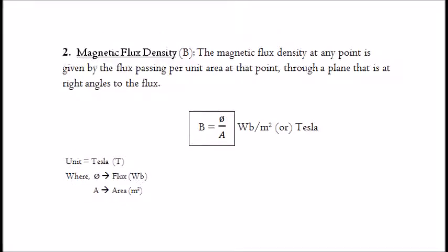2. Magnetic flux density. The magnetic flux density at any point is given by the flux passing per unit area at that point, through a plane that is at right angles to the flux. It is given by: B equals φ divided by A. The unit of magnetic flux density is Tesla, where φ is flux in Webers and A is the area in meters squared.